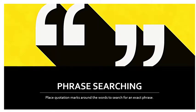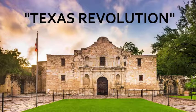Phrase searching is really important. What you're doing is searching for a keyword that has two or more words to make its meaning. The best way to explain it is using a name: if you're searching for a specific person, you want to put quotation marks around it to make sure the search engine only looks for those words together. You don't want one part of the keyword in one section of the article and the other part somewhere else. My search is the Texas Revolution — I only want articles about the Texas Revolution, and no other revolution should be coming up.